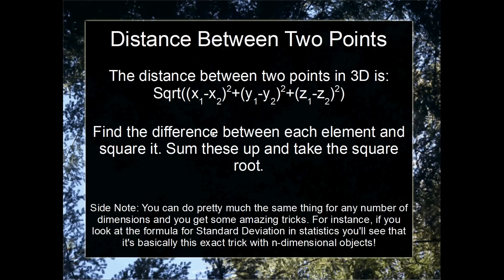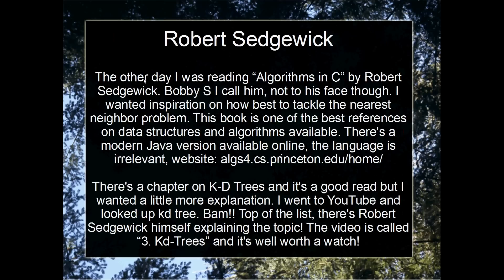What's really cool is you can do this with as many dimensions as you want — you could find the distance between two points in 150-dimensional space really easily, though it's pretty hard to think about. Interestingly, the formula for standard deviation is basically this same formula, except the second point is the average point.